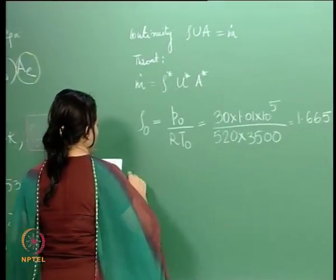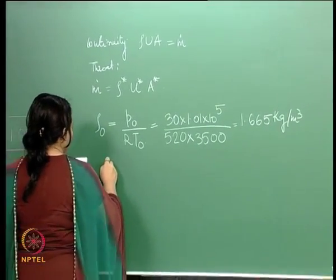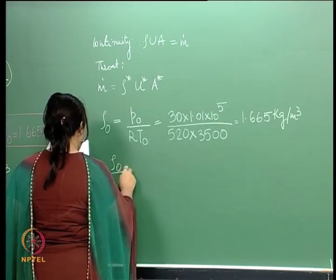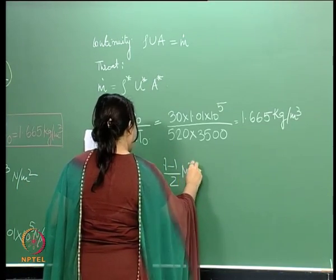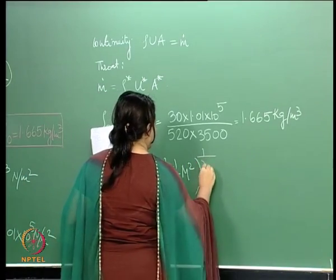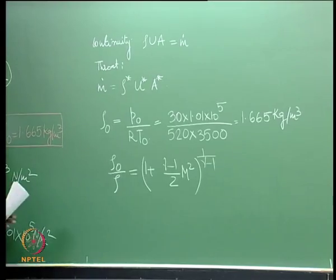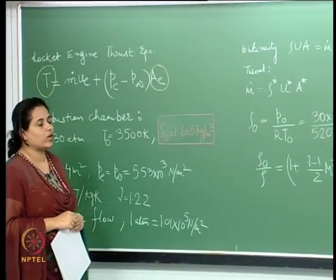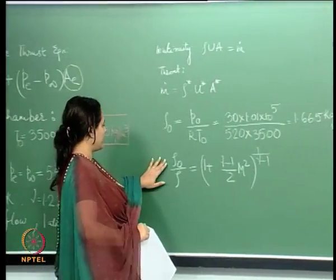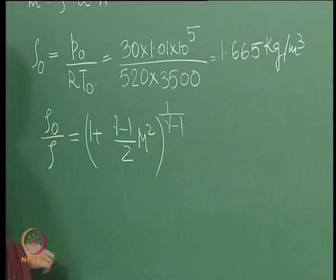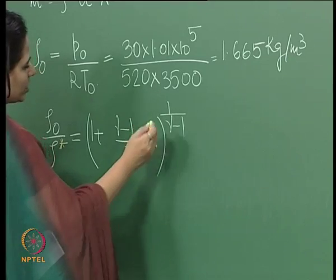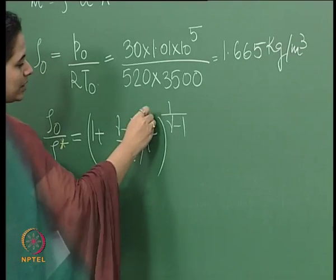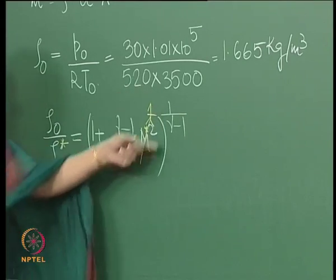Now, how do we get the density at the throat? For a calorically perfect gas, we have an isentropic relation between rho and rho-naught. Rho-naught is something we have calculated. For rho-star at the throat, the Mach number M* equals 1, because the throat is the sonic zone. Substituting M=1 into the isentropic density relation gives us the expression for rho-star.